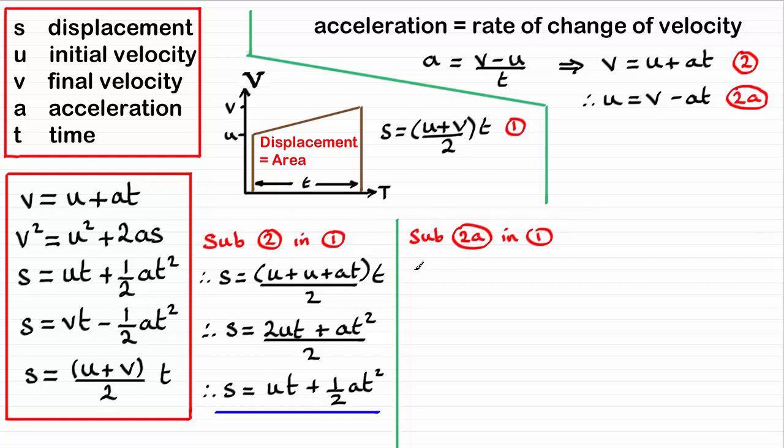And if we do that, what we end up with is, again, something very similar. s equals, now, instead of u, it's going to be v minus at. And then we plus the v that we've got here. It's all divided by 2, and multiplied by t.